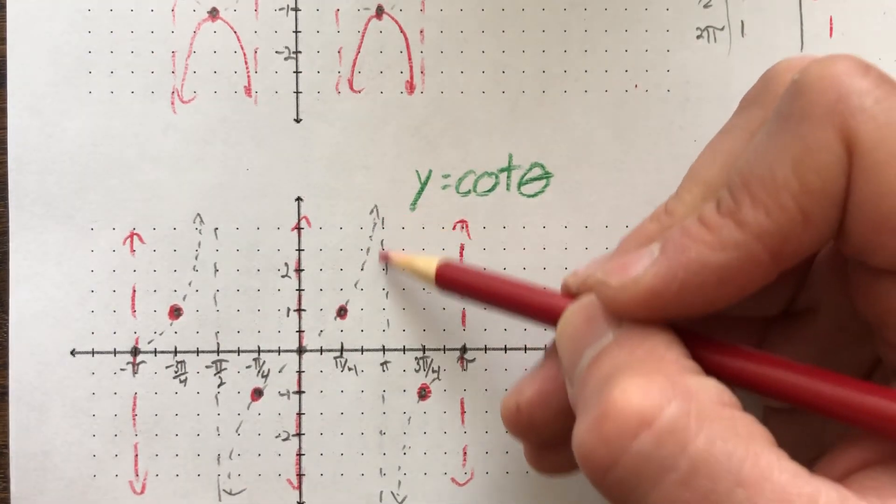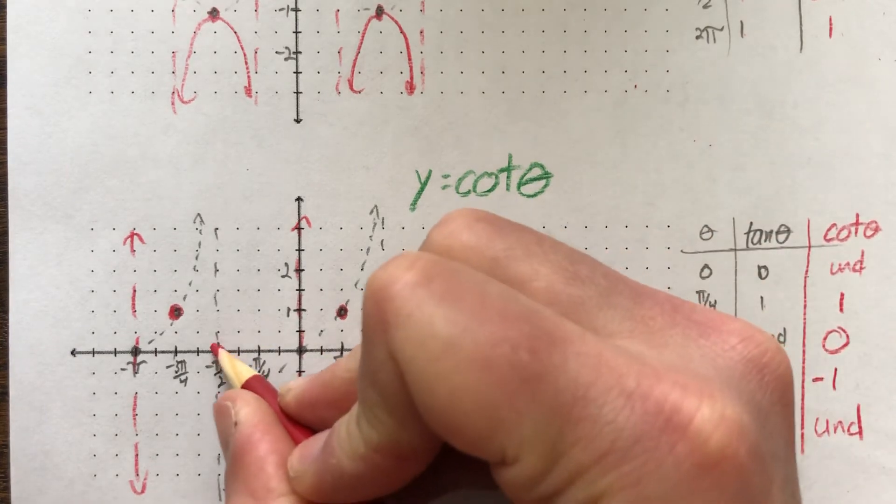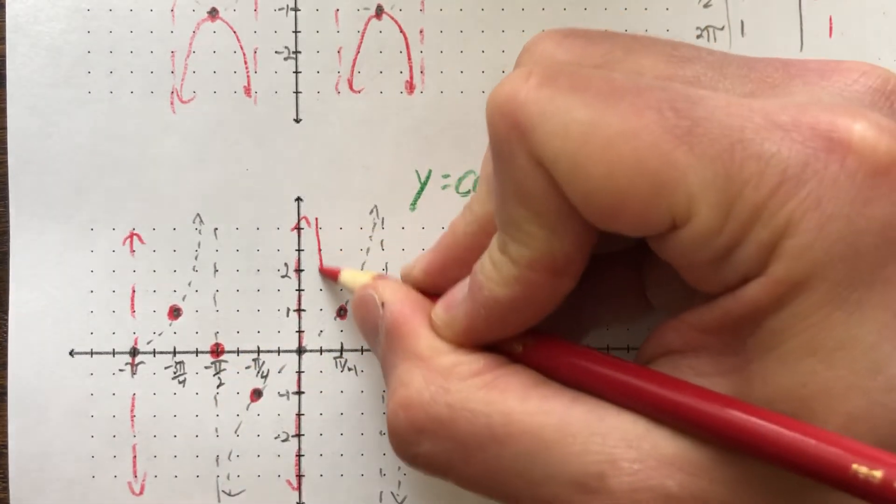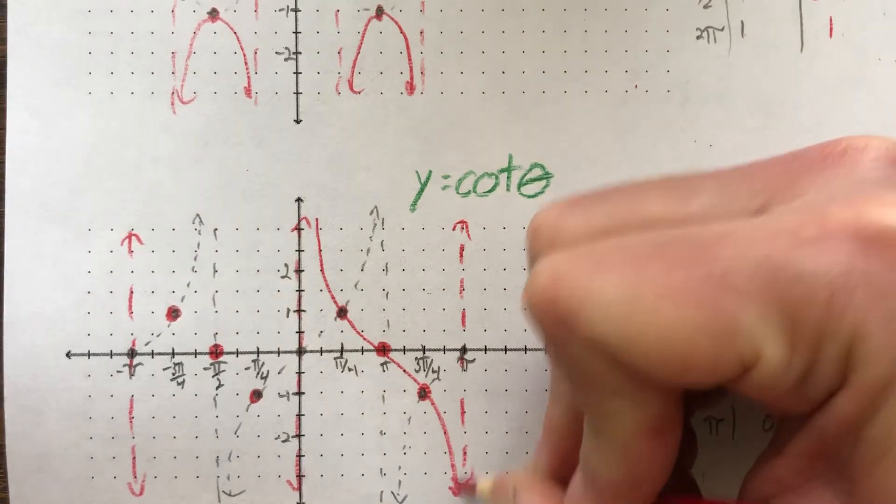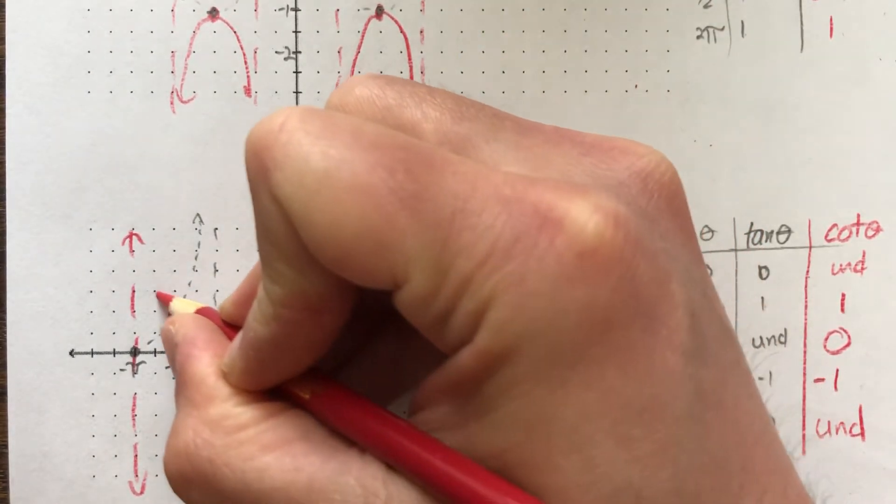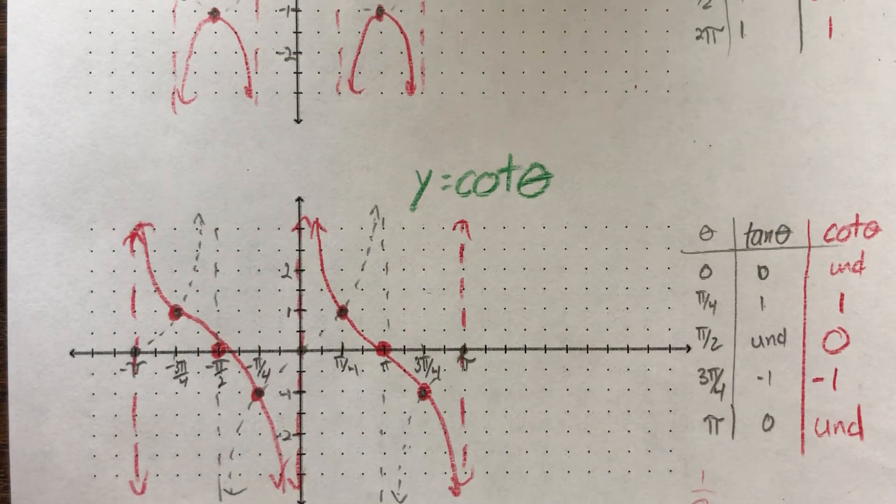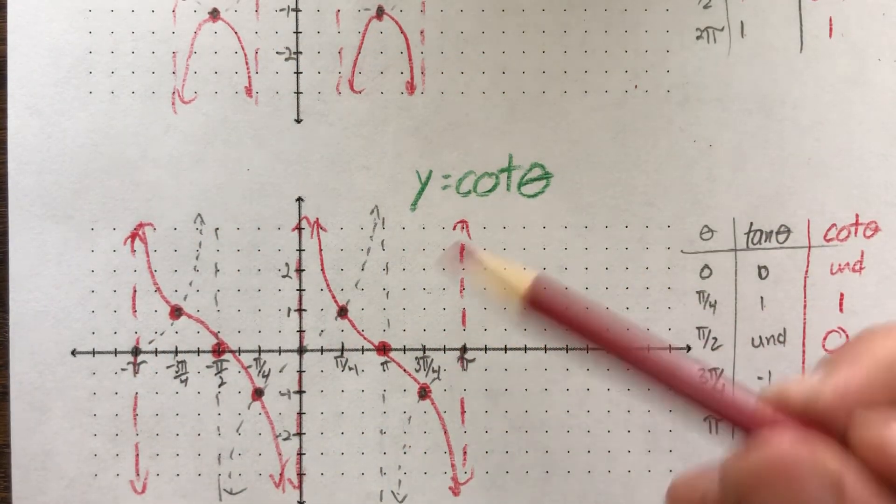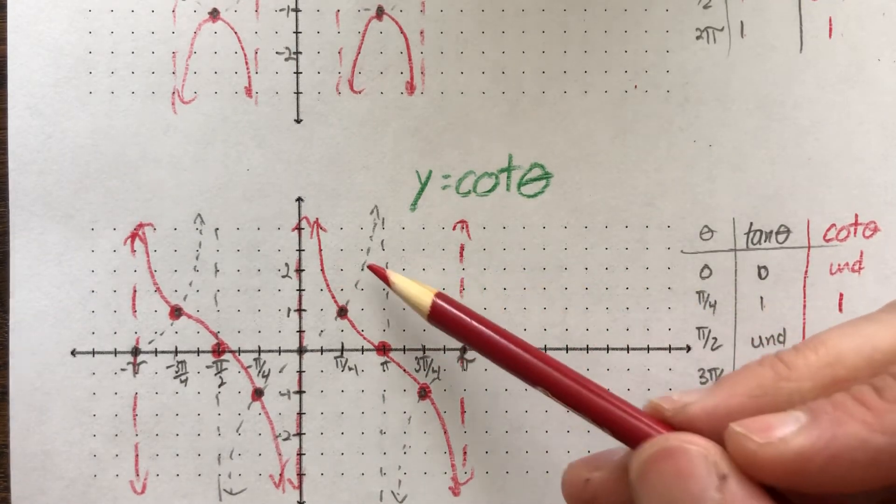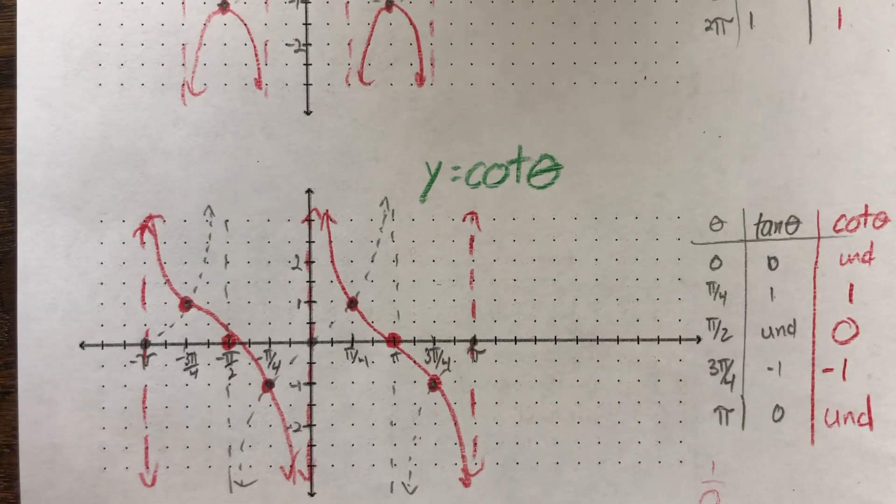And where you had undefined, you now have a 0. And then the graph is going to look like this. Okay, so it's not quite the same because it's not, like, flipped or...